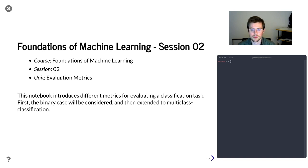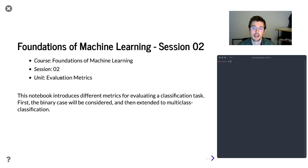In the first half of this lab session, we will look at the binary case — classifying whether something is true or false, negative or positive. In the second part, we will extend the setting to multi-class classification, where we don't have two classes but up to an infinite number of them. For example, if you were to classify a picture by which animal it contains, you could have horses, cats, dogs, and so on.